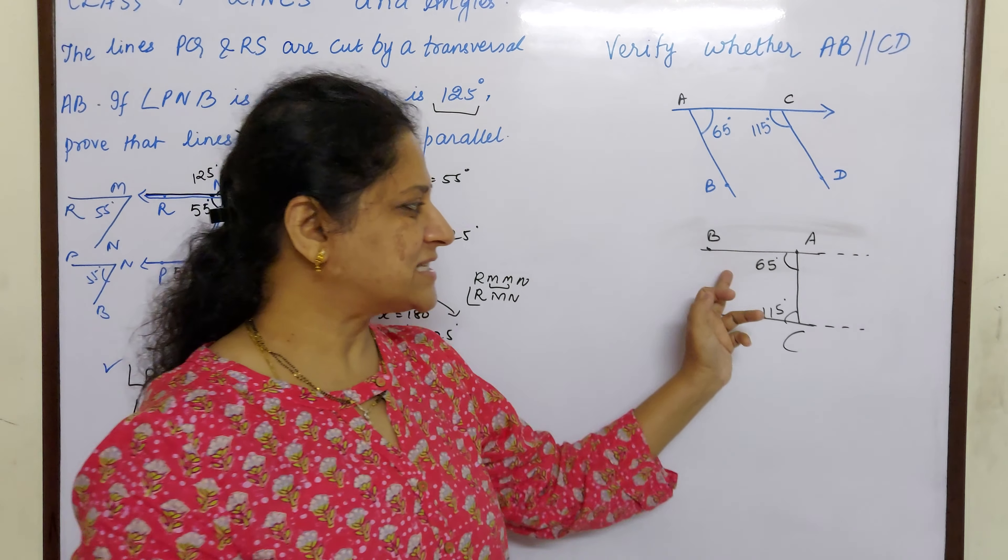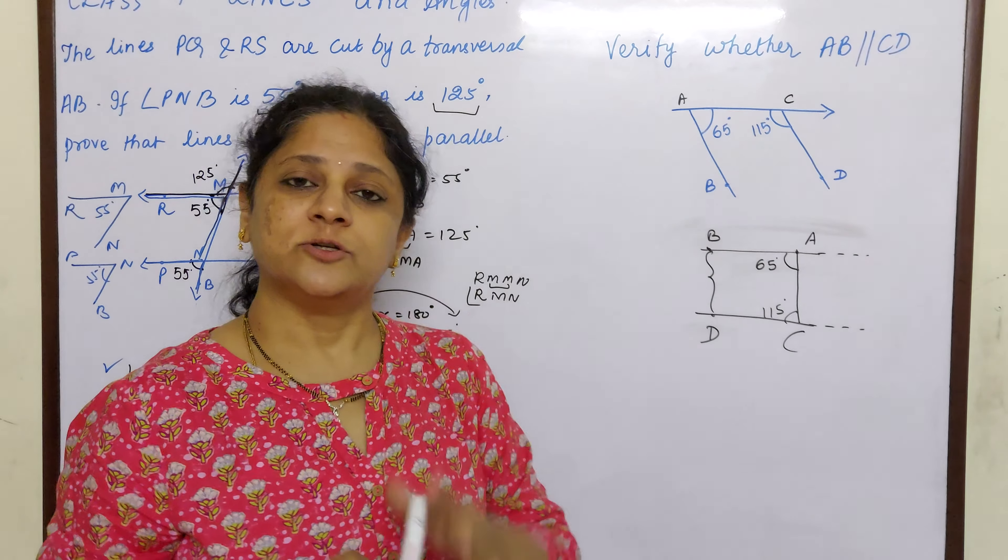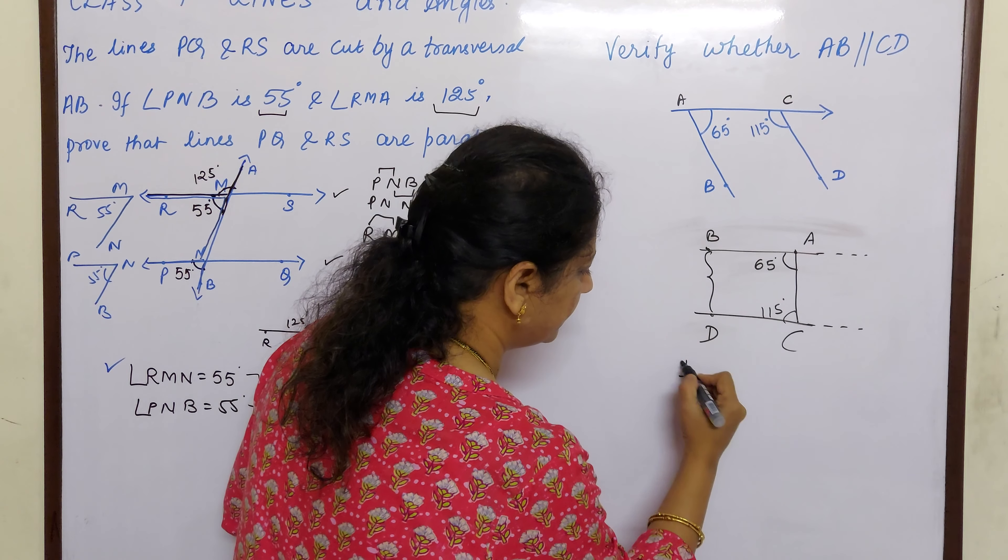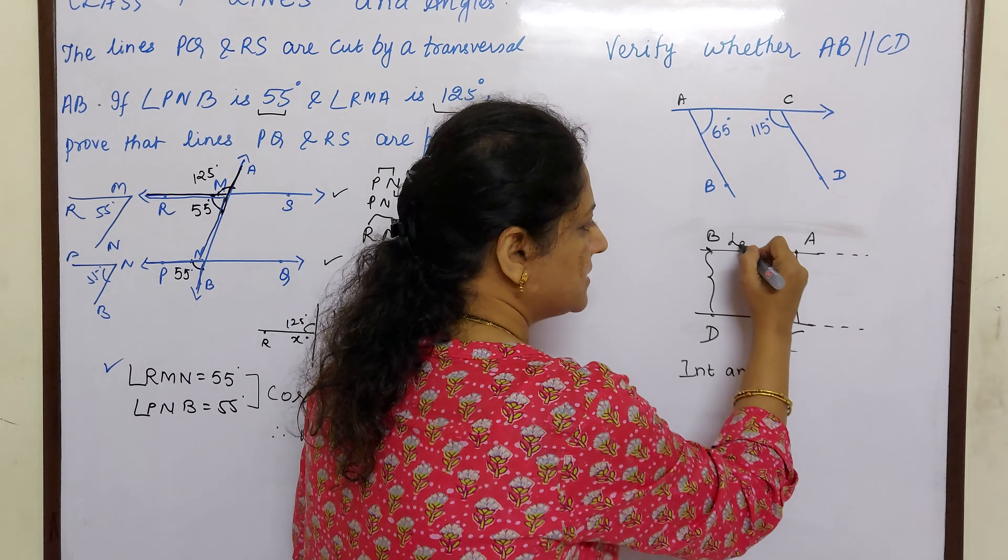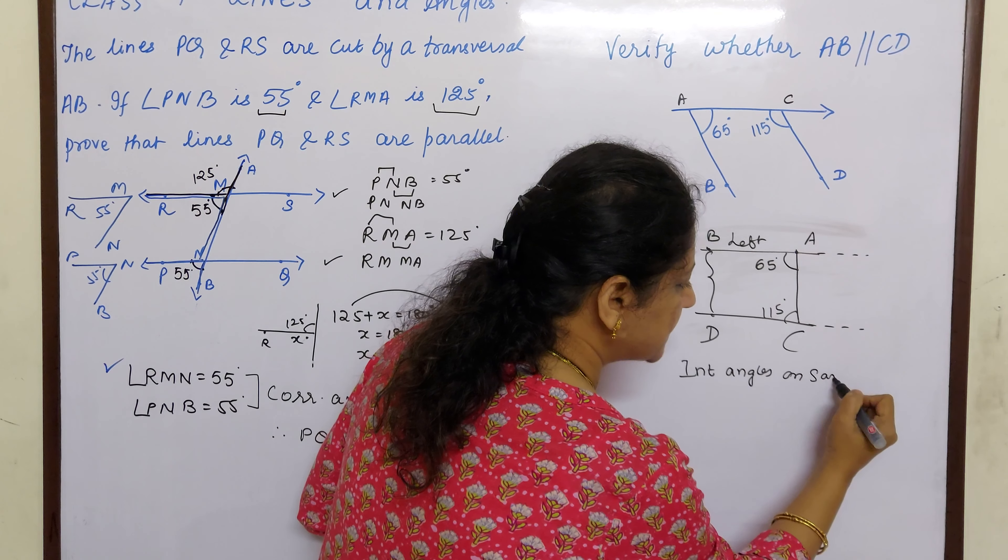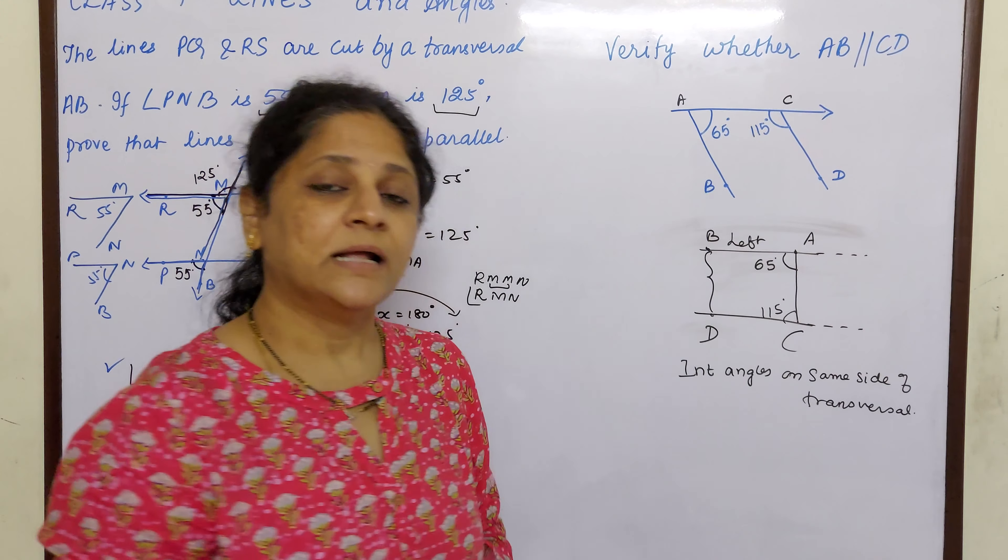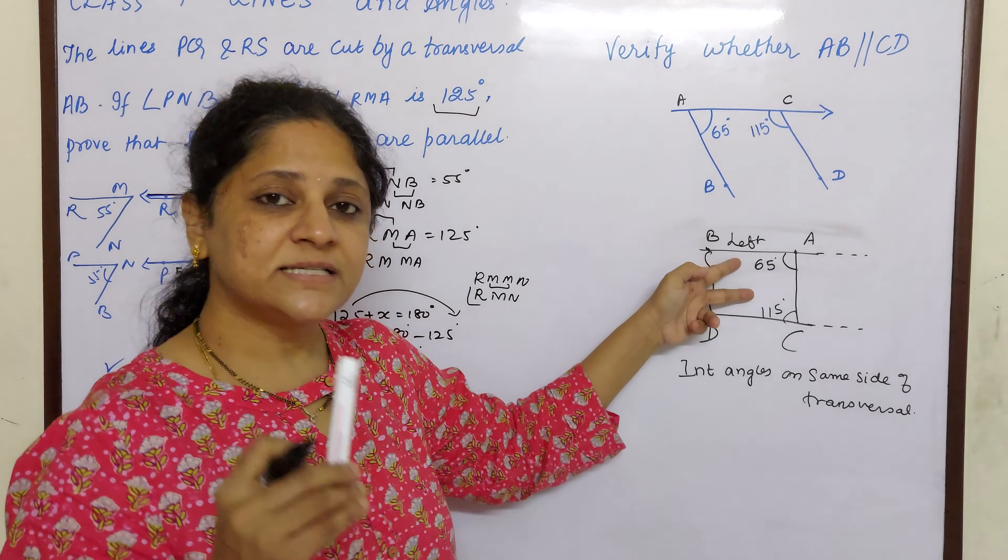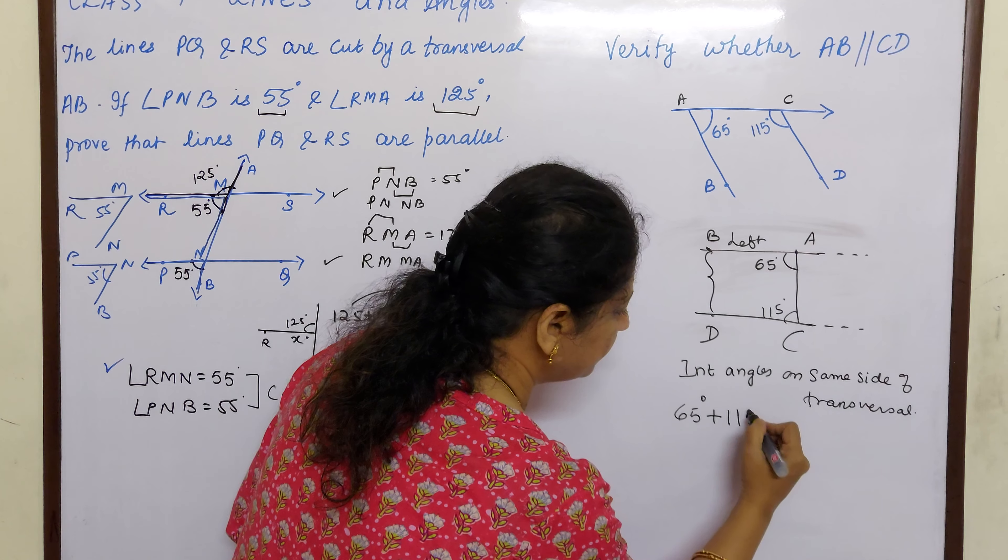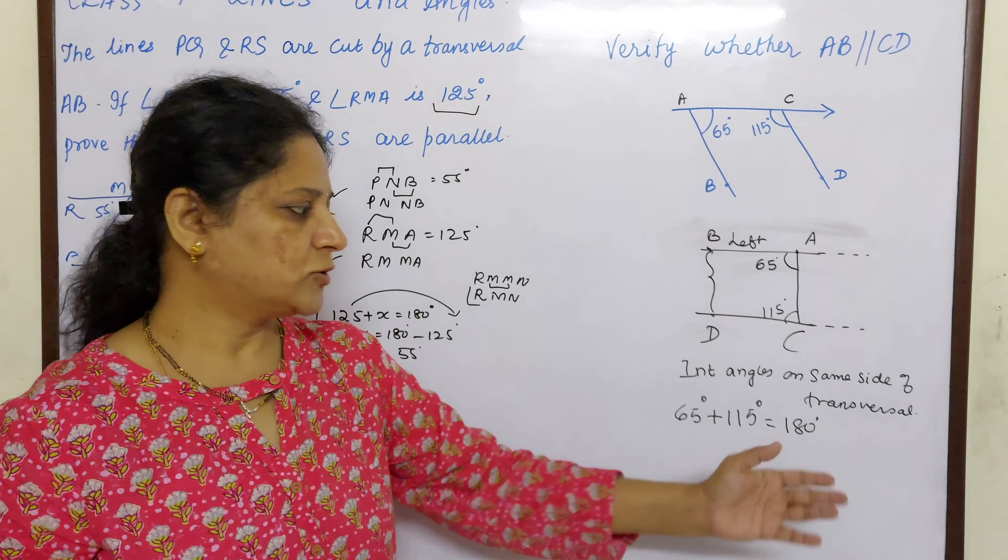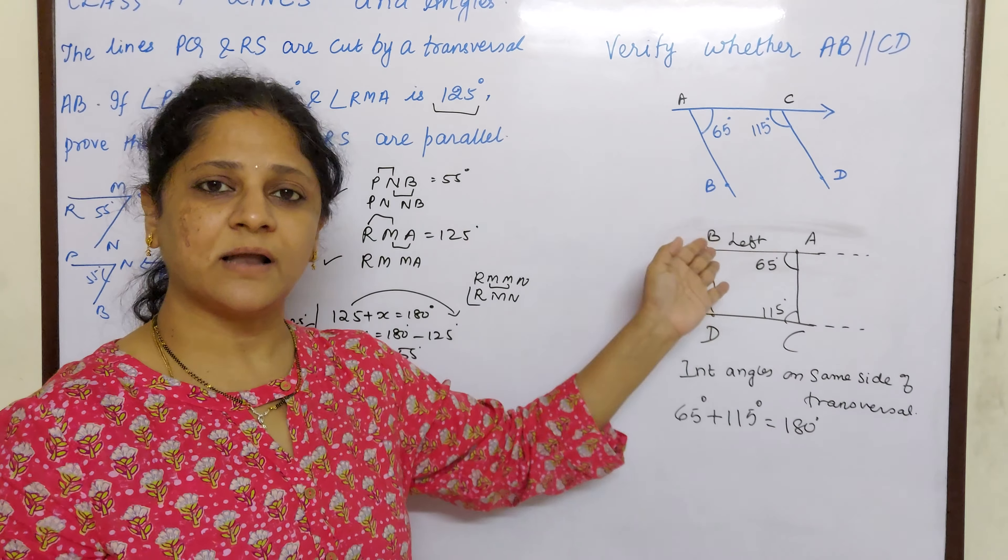Now what can you say about this 65 degrees and 150 degrees children? It is different. Yeh dono lines ke beech hai. So they are interior angles. Yes. Agree. They are interior angles. Both are on the left hand side of the transversal. So I can say interior angles are on same side of transversal. Okay. Now what is the condition for parallel lines? That if the lines are parallel, interior angles are supplementary. So let us see whether we are getting this as supplementary. 65 degrees plus 115 degrees. Yes. It is coming 180 degrees.